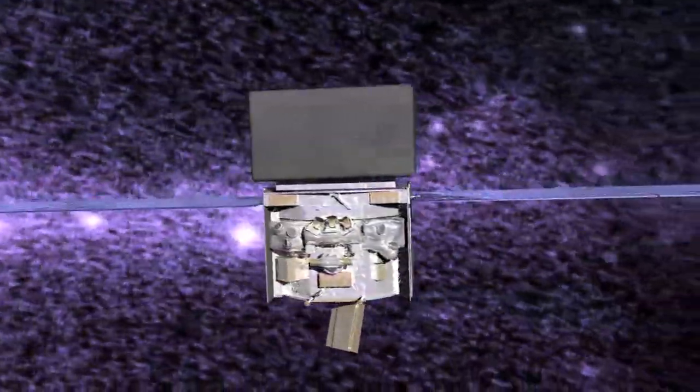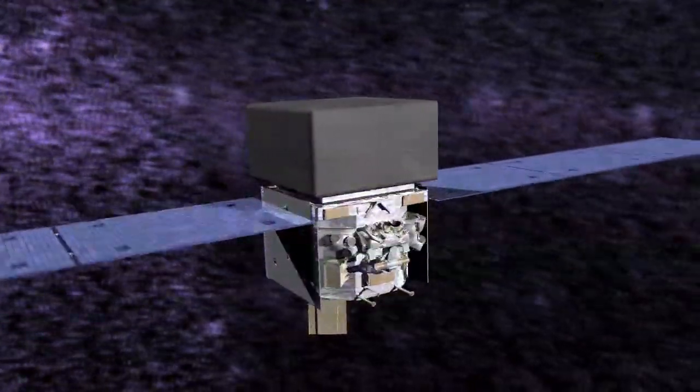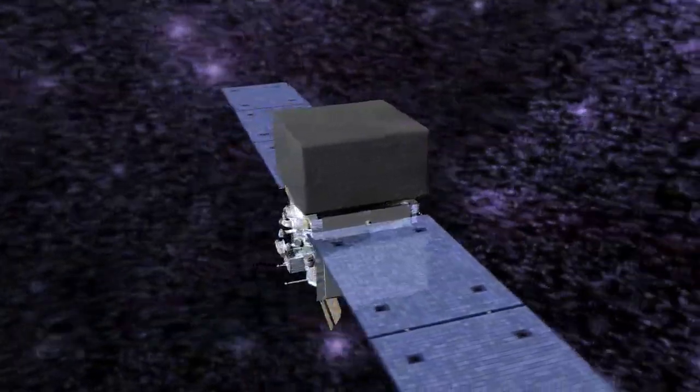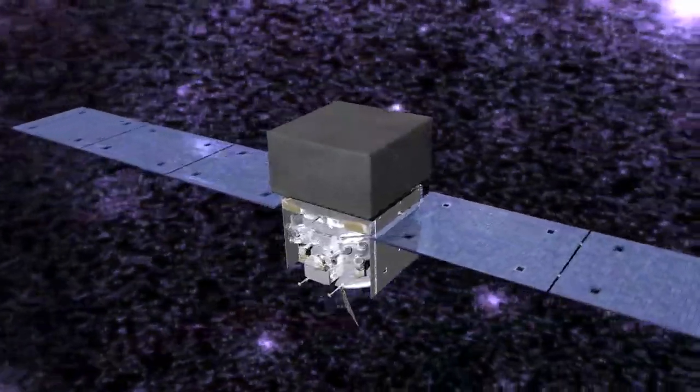NASA's Fermi Gamma-ray Space Telescope detects high-energy radiation from many globular clusters. Usually what Fermi is seeing is the cumulative gamma rays from all of the old pulsars in these clusters.